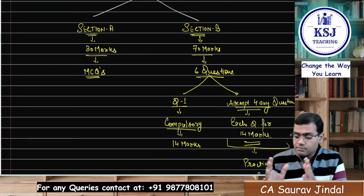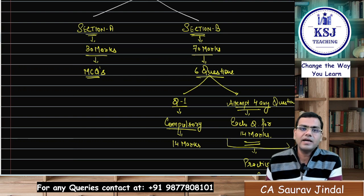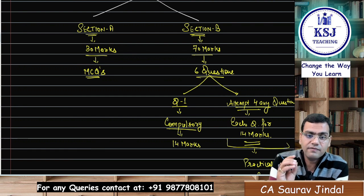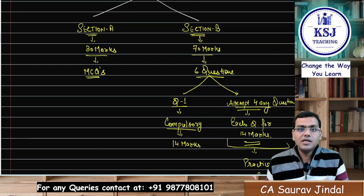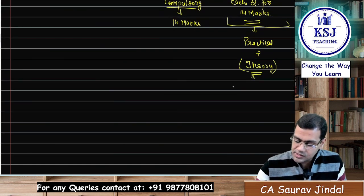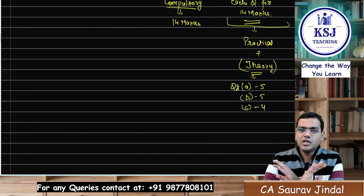In Section B, question number one will be compulsory for 14 marks, and out of the remaining five questions you have to attempt any four questions. Each question will be of 14 marks — it could be an A and B section with nine and five marks, or an A, B, C segment in a particular question. For example, A part five marks, B part five marks, C part four marks. So it can be arranged in any of the ways. This is going to be the paper pattern for paper number four, cost accounting.